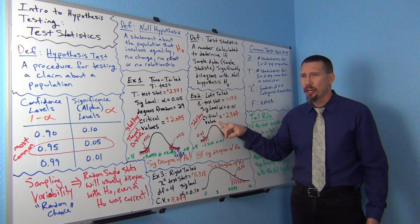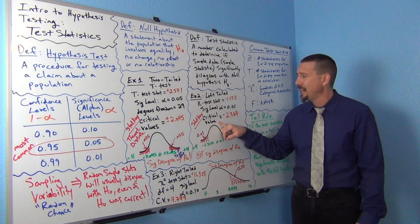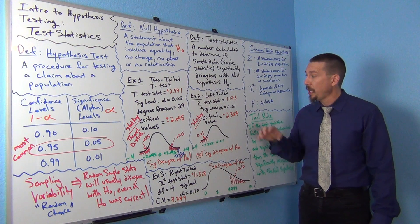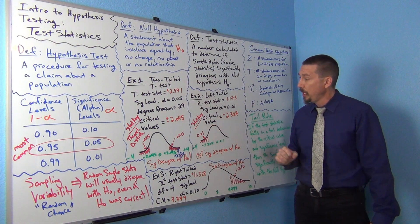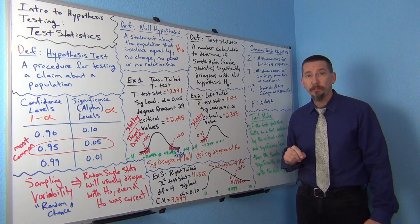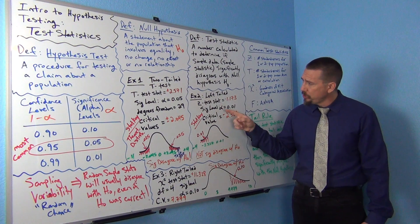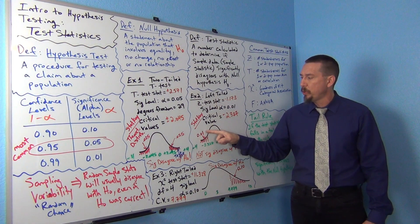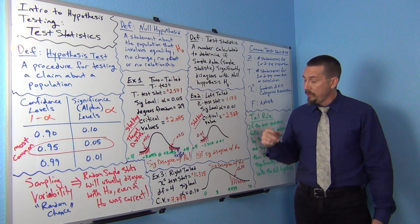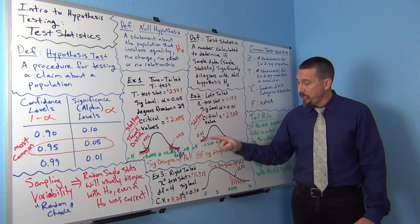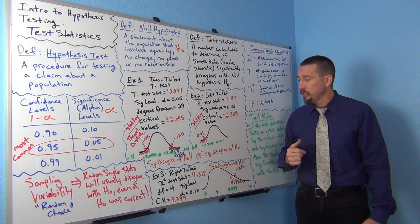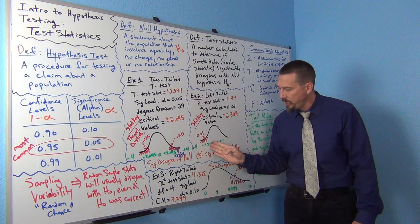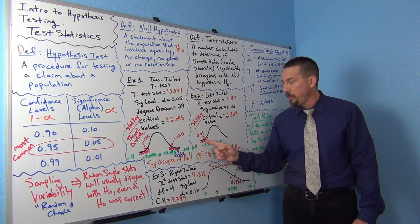By the way, you can look up critical values with charts — some stat classes still do that — but I really like to use technology. I prefer to use StatKey to look up the critical values. A lot of computer programs will just give this to you right at the start. So once you get your printout for your hypothesis test, you'll see that this is given to you. What I did was I went to the normal theoretical calculator in StatKey, clicked left tail, and put in the percentage in the left tail as 0.01. The computer calculated the critical value, and it determined that the test statistic has to be lower than negative 2.327 to be considered significant.